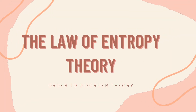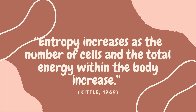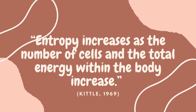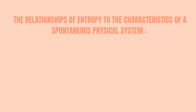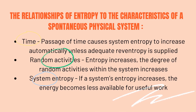The last theory is the order-to-disorder theory, also known as the law of entropy. Entropy measures the disorder or randomness in a system such as our body, while the law of entropy states that a system left to itself automatically worsens with time until the state of disorder reaches a maximum — in humans, we call this death. Kittel (1969) mentioned that entropy increases as the number of cells and the total energy within the body increase. The relationships of entropy to spontaneous physical systems include energy, decay, deterioration, particles, complexity, time, random activities, and system entropy.